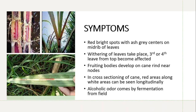What are the symptoms? As you can see here, red bright spots with ash-colored centers appear on the mid-rib of the leaves — specifically the third or fourth leaf from the top — due to infection by this pathogen. Fruiting bodies develop on the cane rind.